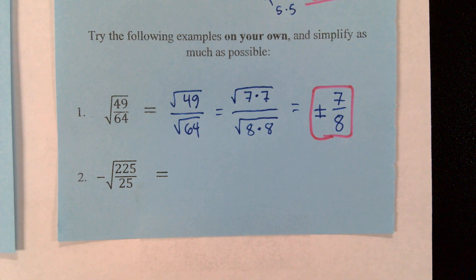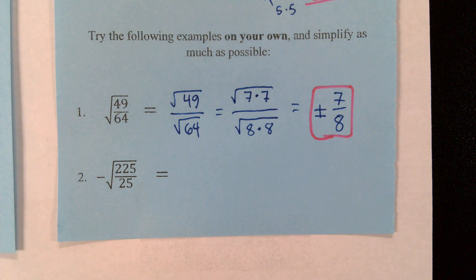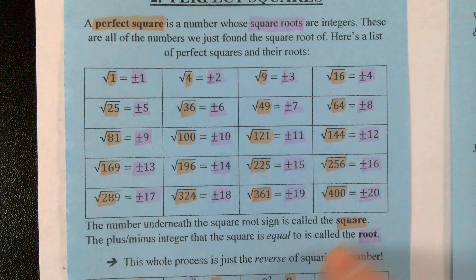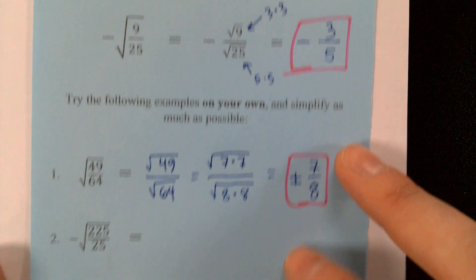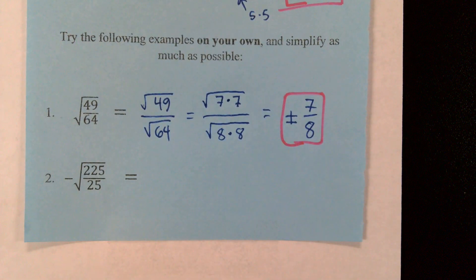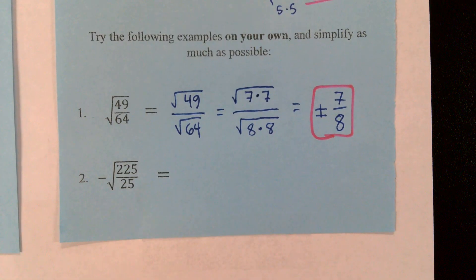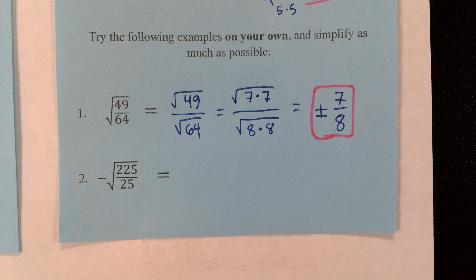All the numbers on this worksheet are perfect squares — they are all present on this chart, highlighted in orange. So whatever number you're breaking up on your worksheet, it will be on this chart. Please use this chart if you're a little iffy on your multiplication facts.